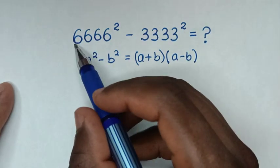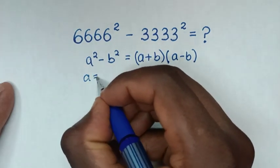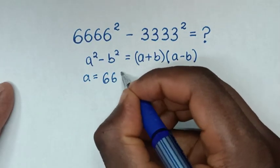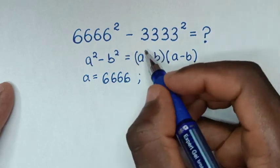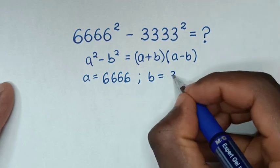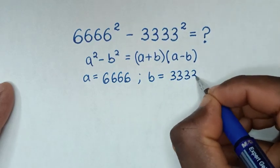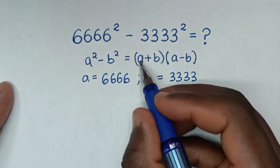When we compare a squared with 6,666 squared, then a equals 6,666. When we compare b squared with 3,333 squared, then b equals 3,333. Now we'll apply the formula.